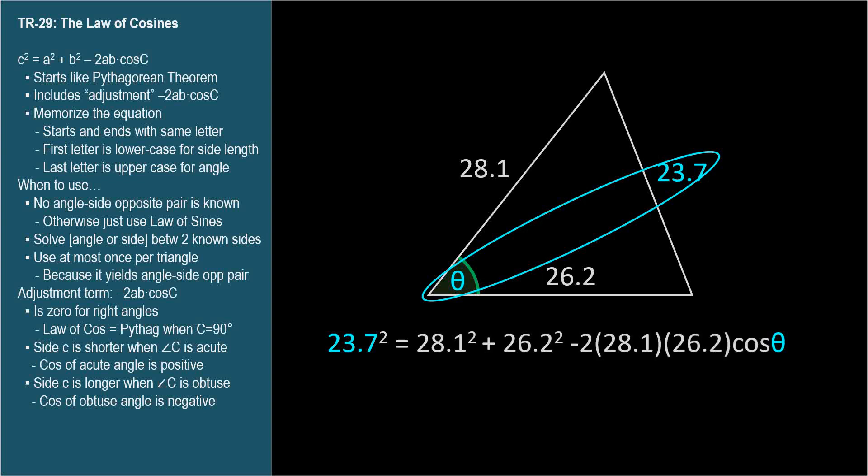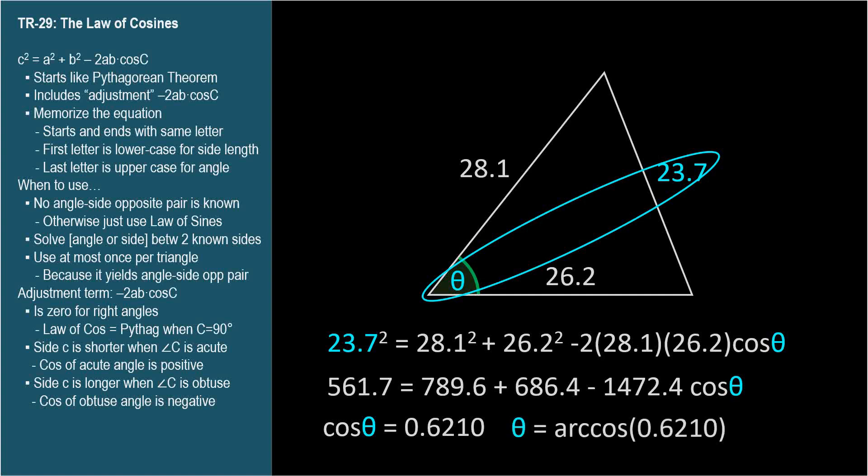Let's plug in our known values into the Law of Cosines equation. The Pythagorean Theorem part and the adjustment part. We're going to solve for theta. We end up with cosine theta equals 0.6210. So we use arc cosine to find the angle whose cosine is 0.6210. And the answer is 51.6 degrees. The other two angles are found with the Law of Sines.